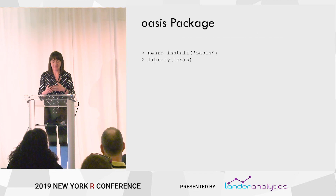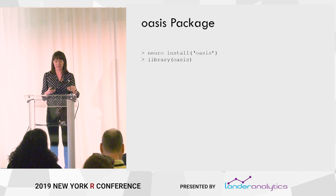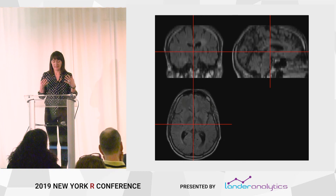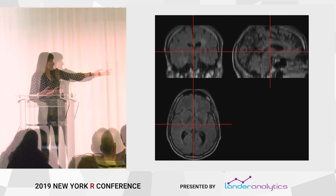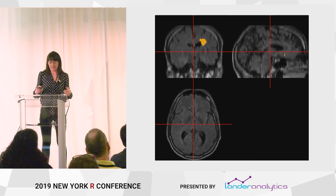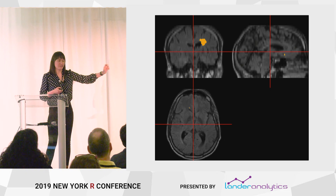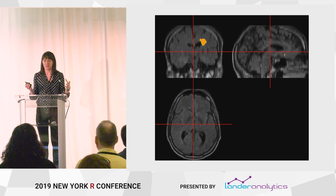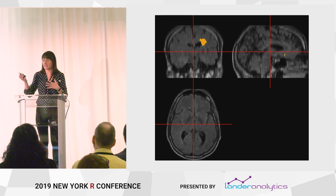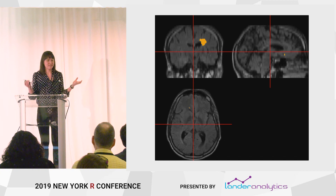That's a project I worked on during my PhD thesis. The software is called OASIS, housed as an R package on Neuroconductor. You can just do neuroinstall OASIS, library OASIS. It creates binary maps of where lesions are in the brain. There are also other packages for stroke segmentation, brain cancer segmentation, and other diseases. I'd really encourage everybody to check out Neuroconductor and see what's on there.